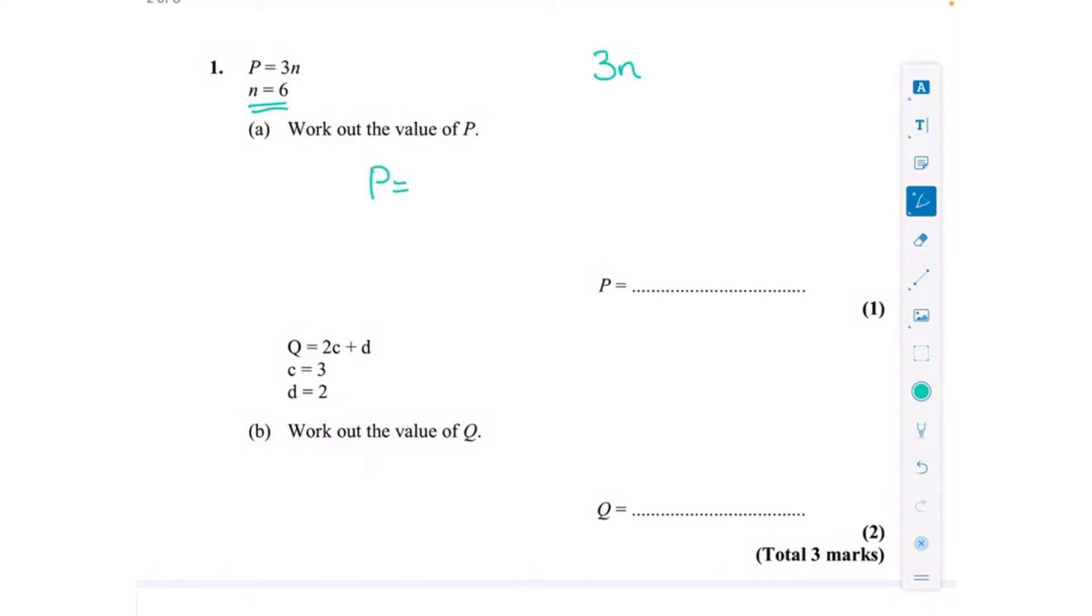So all we need to do for this question is p equals three lots of 6, or three times 6, and that is 18. So three times 6 is 18. Now for the next question, q is 2c add d, c is 3 and d is 2, so work out the value of q.